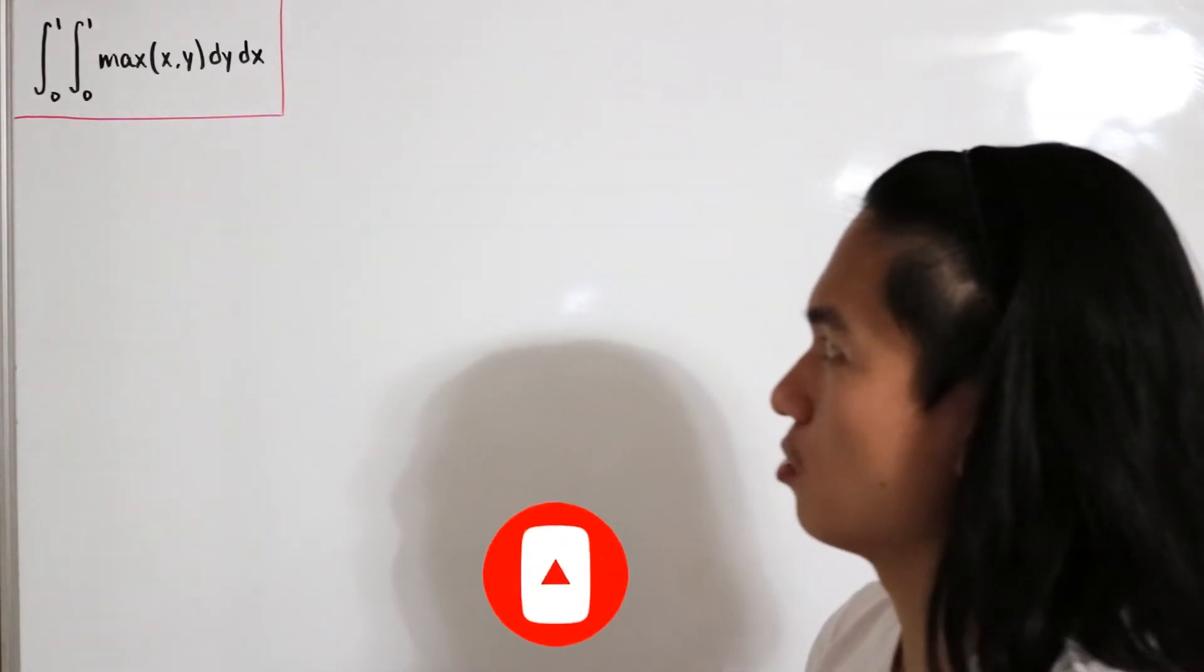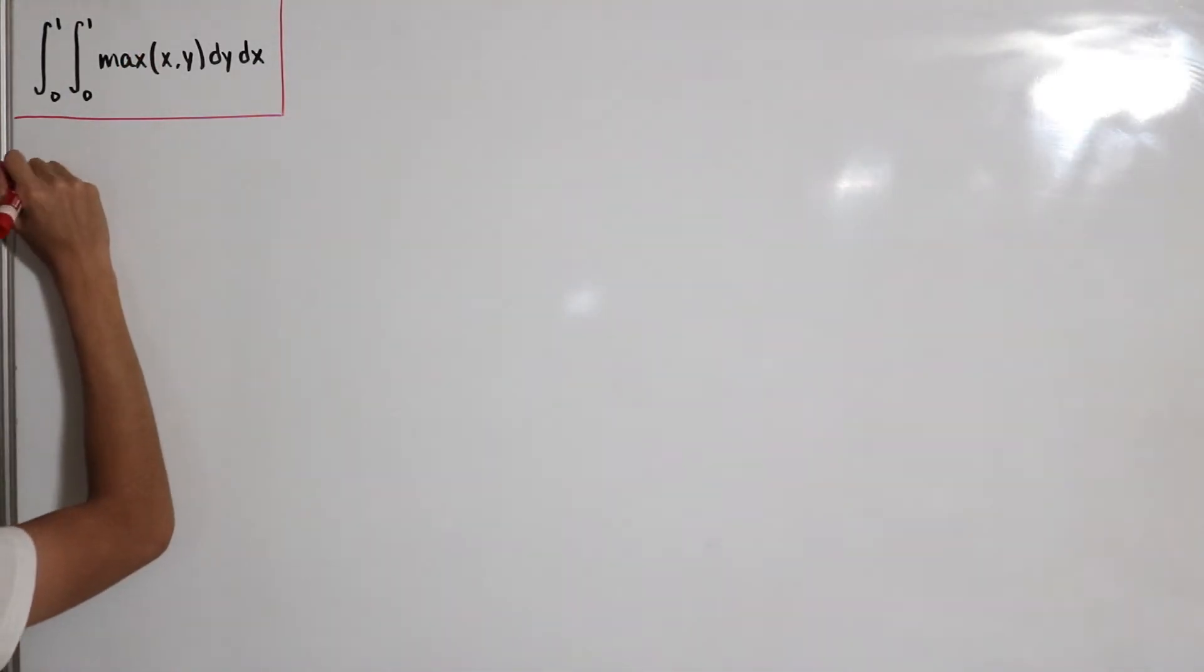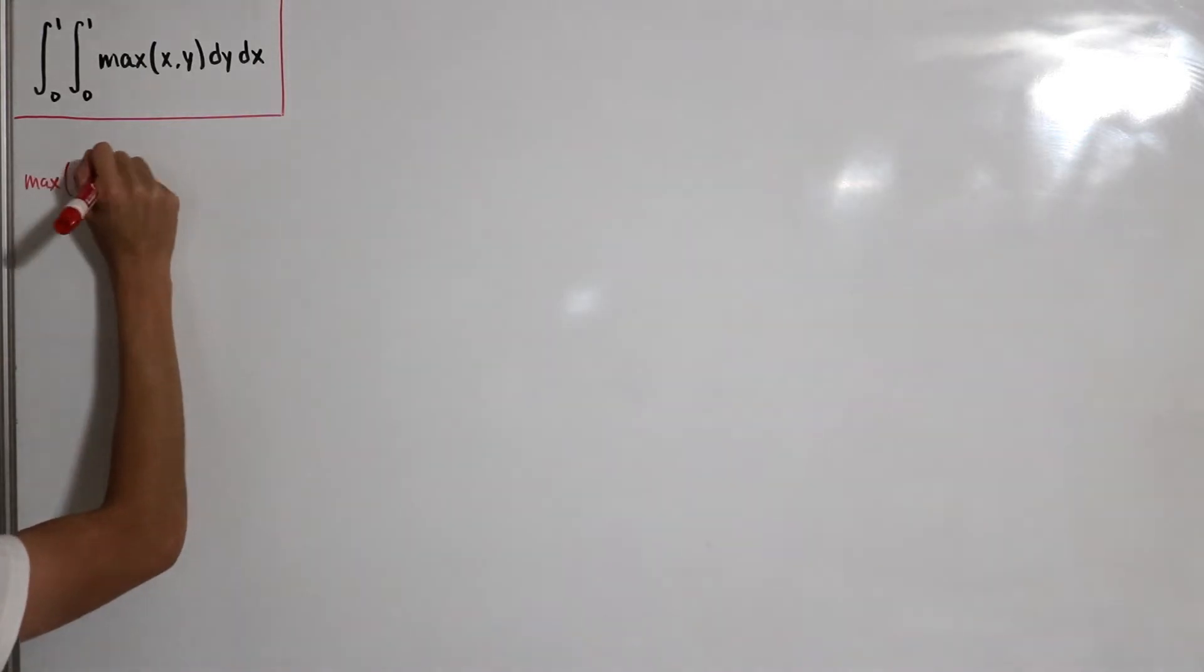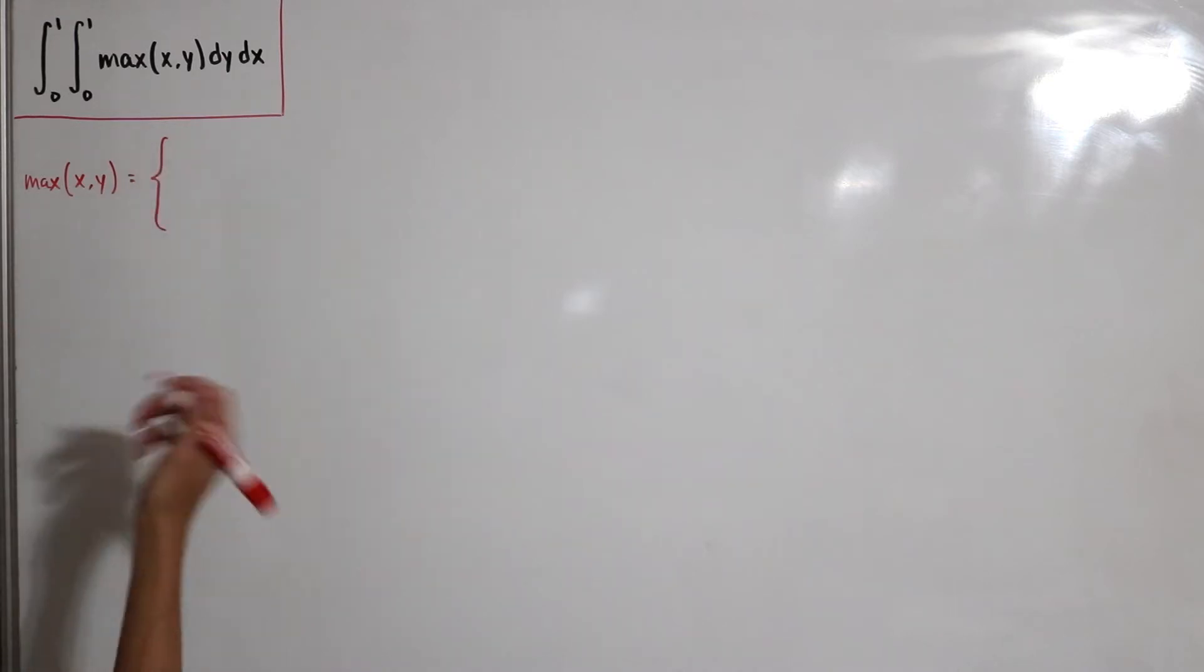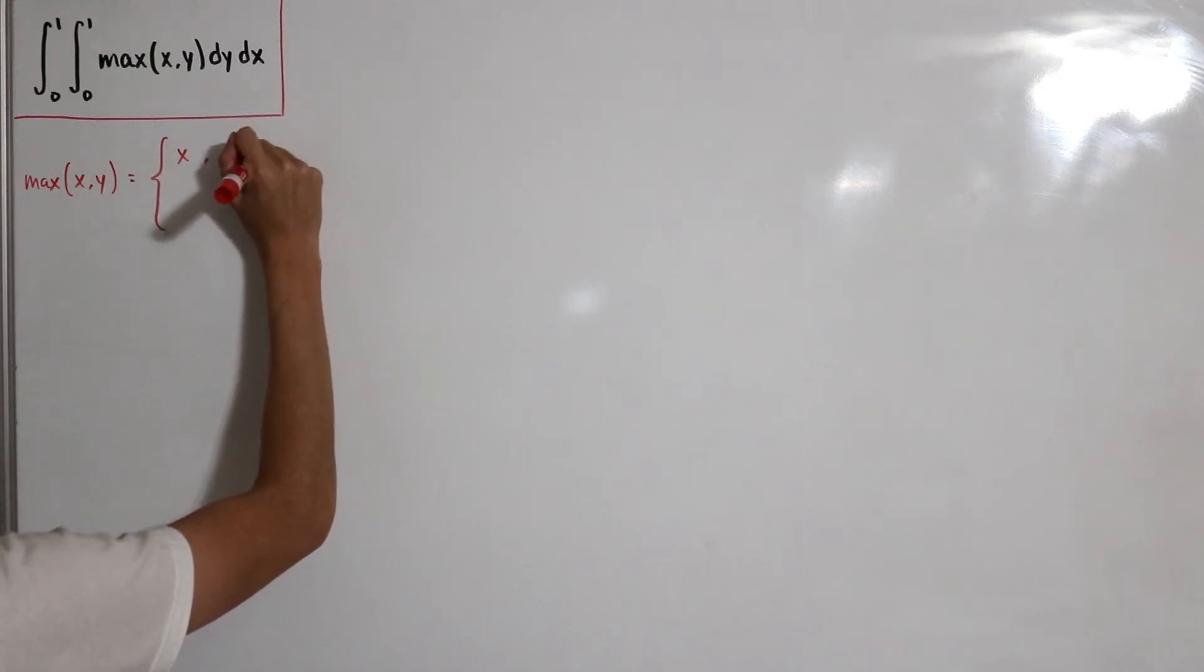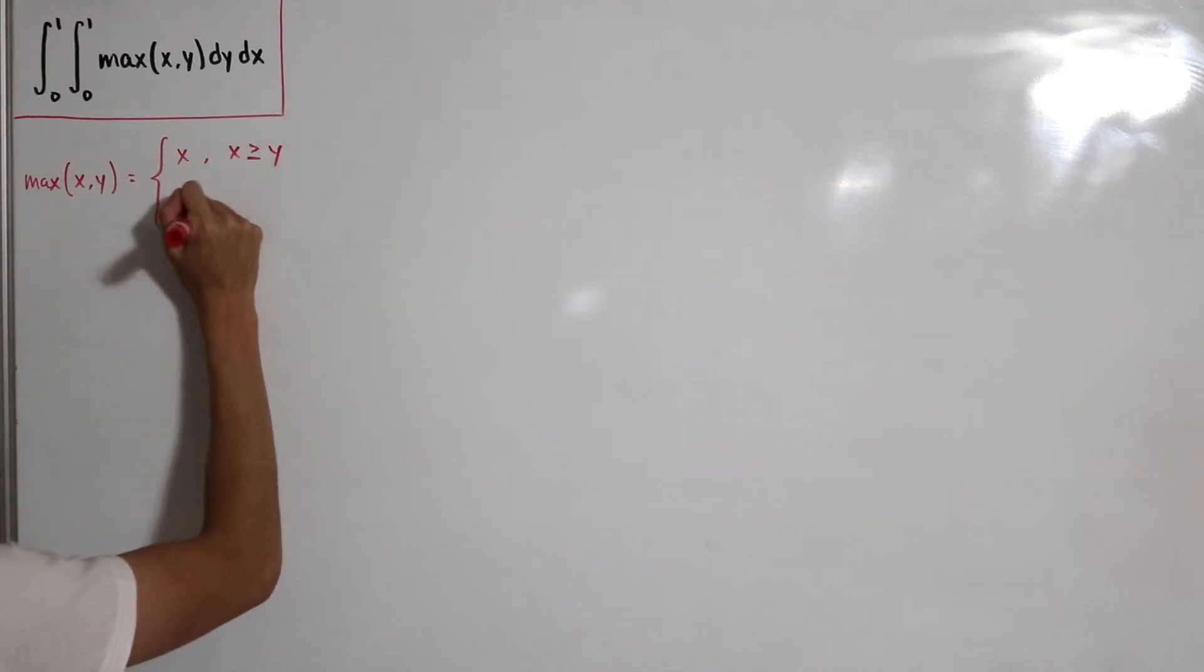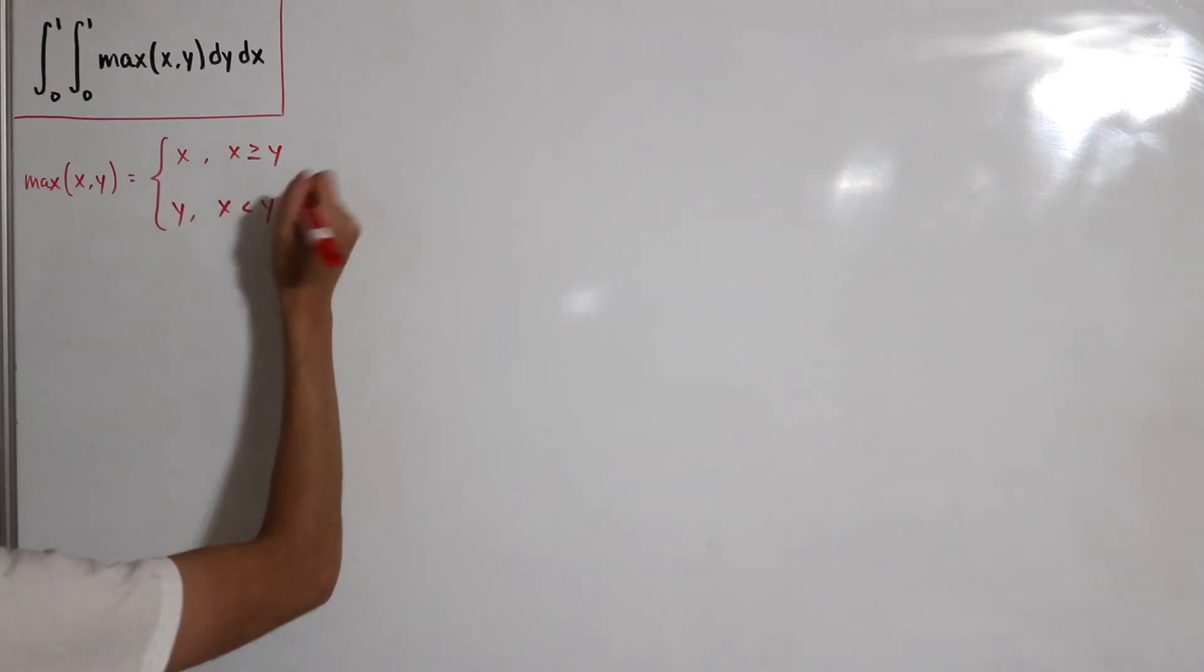First I'll define what the max function specifically is. It's defined as the maximum between our two numbers x and y. It can be split up into two cases. It equals x when x is greater than or equal to y, and it's equal to y if x is strictly less than y.